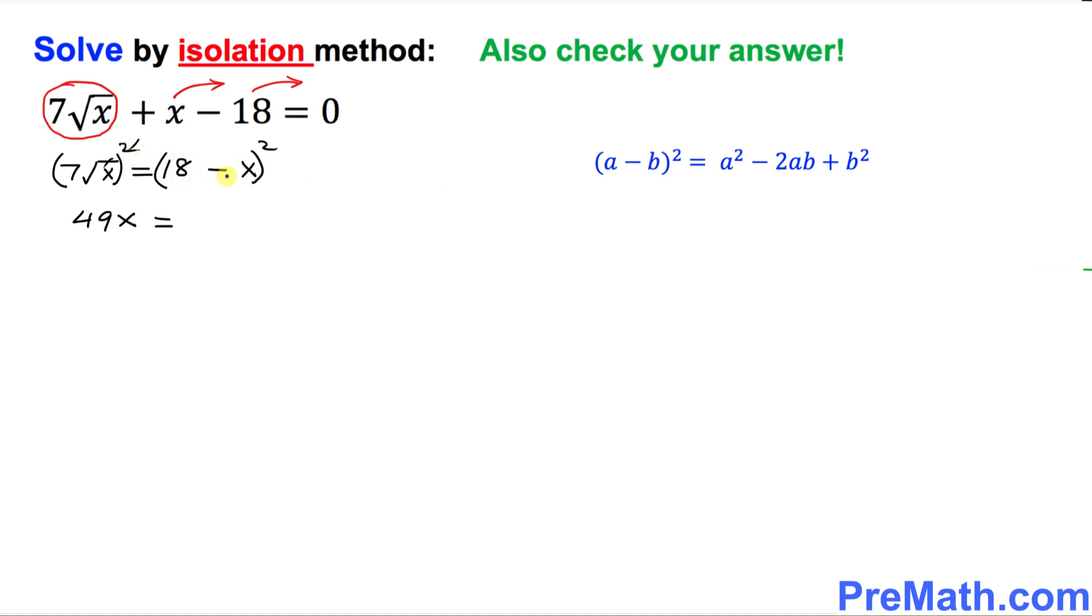18 minus x square could be written as 18 minus x times 18 minus x. Let's multiply these one. I put it twice because the exponent is 2. So 18 times 18, you just simply use that this rainbow method. This is what we will be doing.